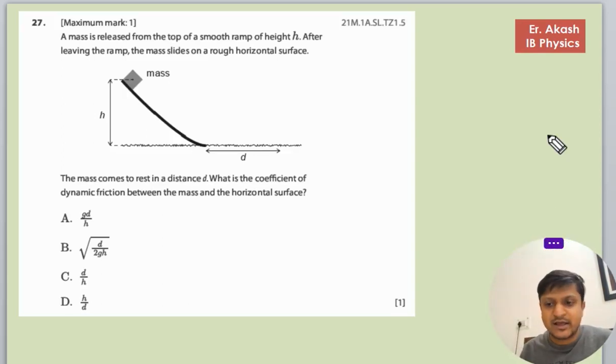There is another question that says a mass is released from the top of a smooth ramp of height h. Leaving the ramp, the mass slides on a rough surface. This is a rough surface and this is a smooth surface. The mass comes to rest in the distance d. What is the coefficient of dynamic friction between the mass and horizontal surface?